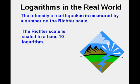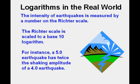The intensity of earthquakes is measured by a number on the Richter scale. The Richter scale is scaled to a base 10 logarithm. For instance, a 5.0 earthquake has twice the shaking amplitude as a 4.0 earthquake.